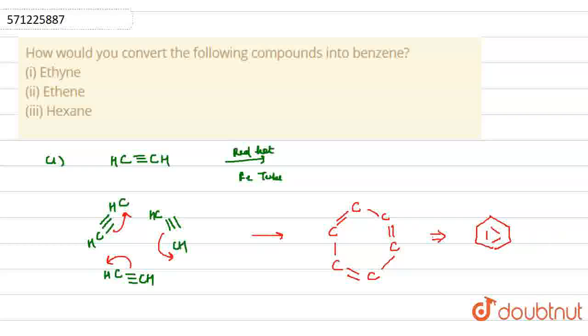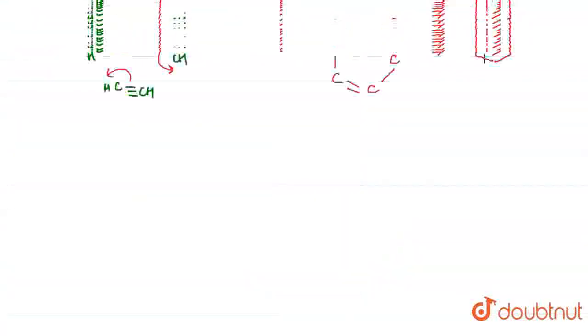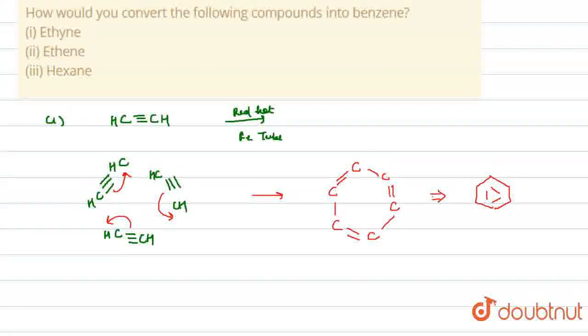So, this is actually the structure of benzene. This is the step by which we can convert ethyne molecule into benzene.